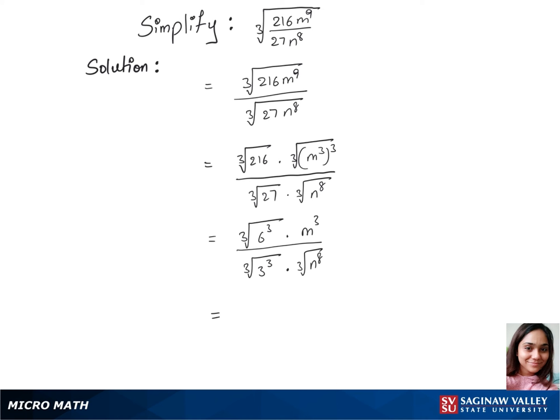Now we have, after striking out cubic root and cube, we have 6 m cubed over 3 times cubic root of n to the power 8. We can strike out 3 and 6 with 2.